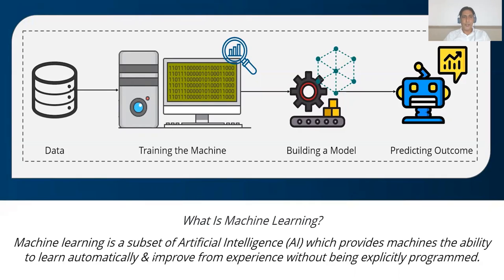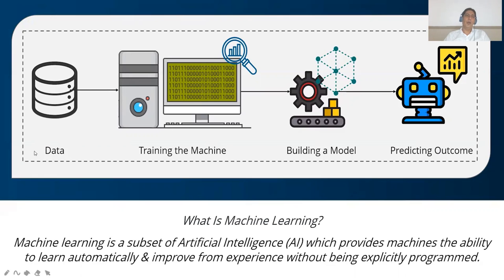We can understand from this figure that there are four parts: data, training the machine, building a model, and predicting the outcome. These are the four steps to follow in machine learning. Whatever processing happens, it happens on the data.